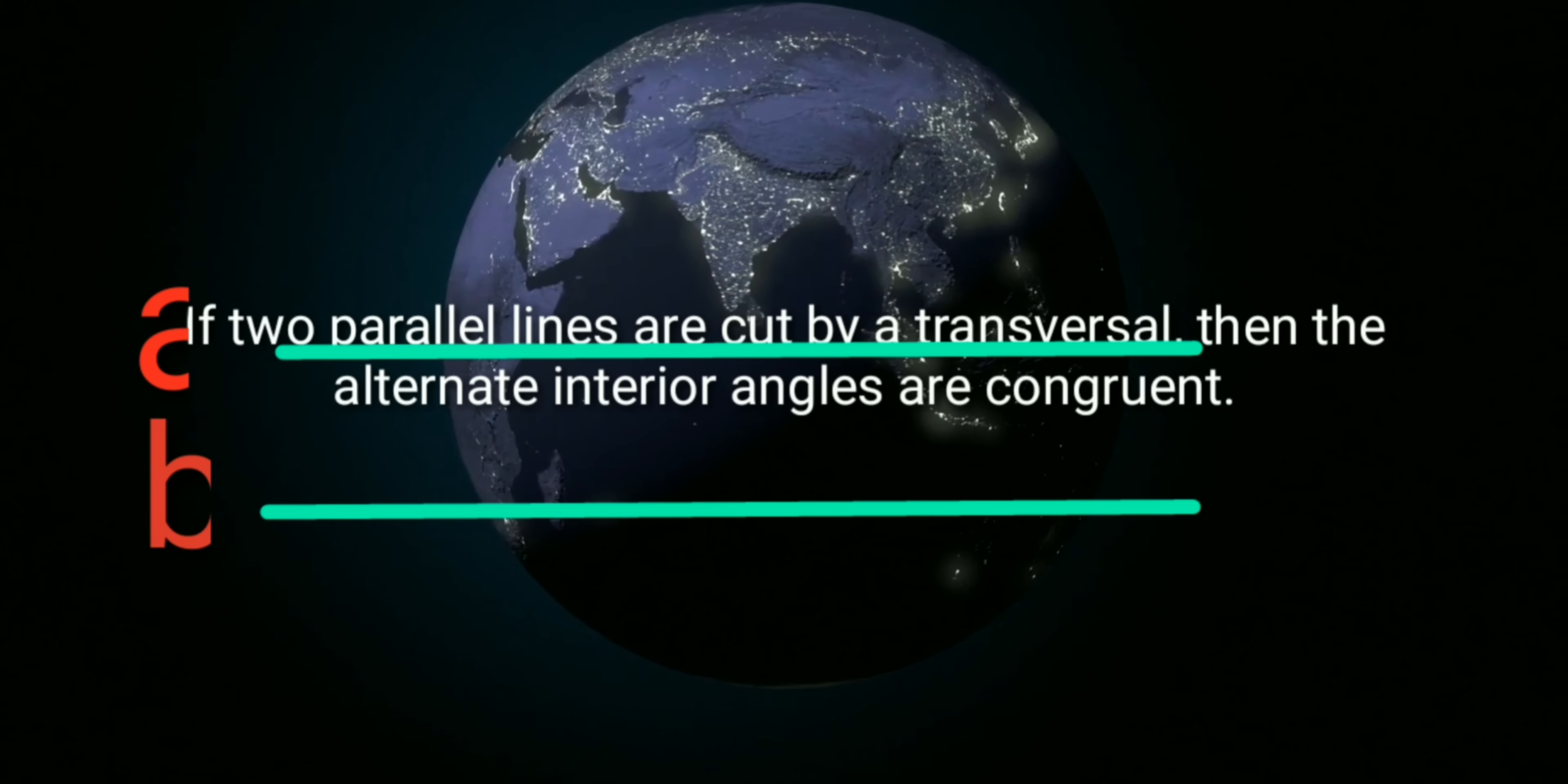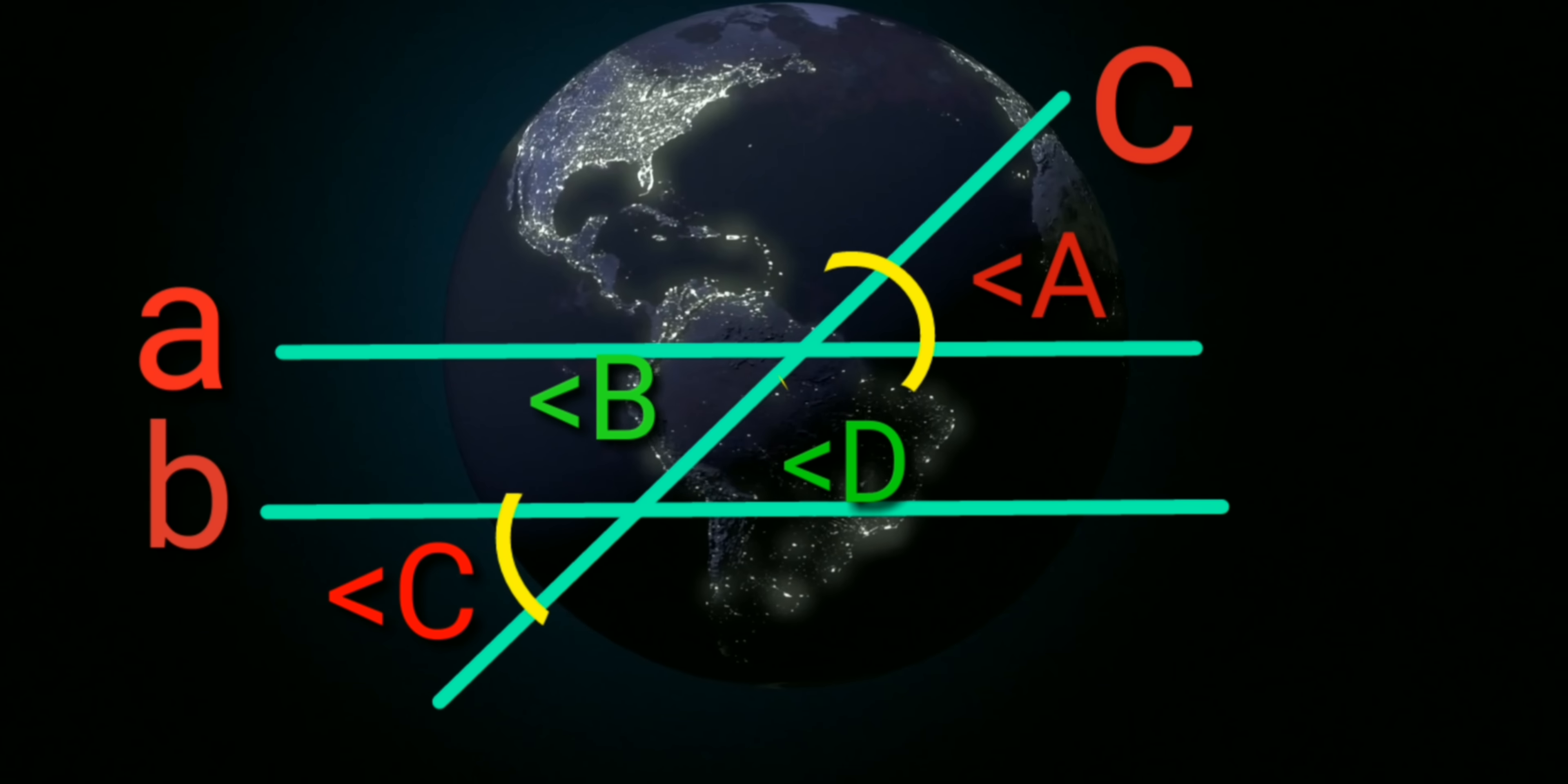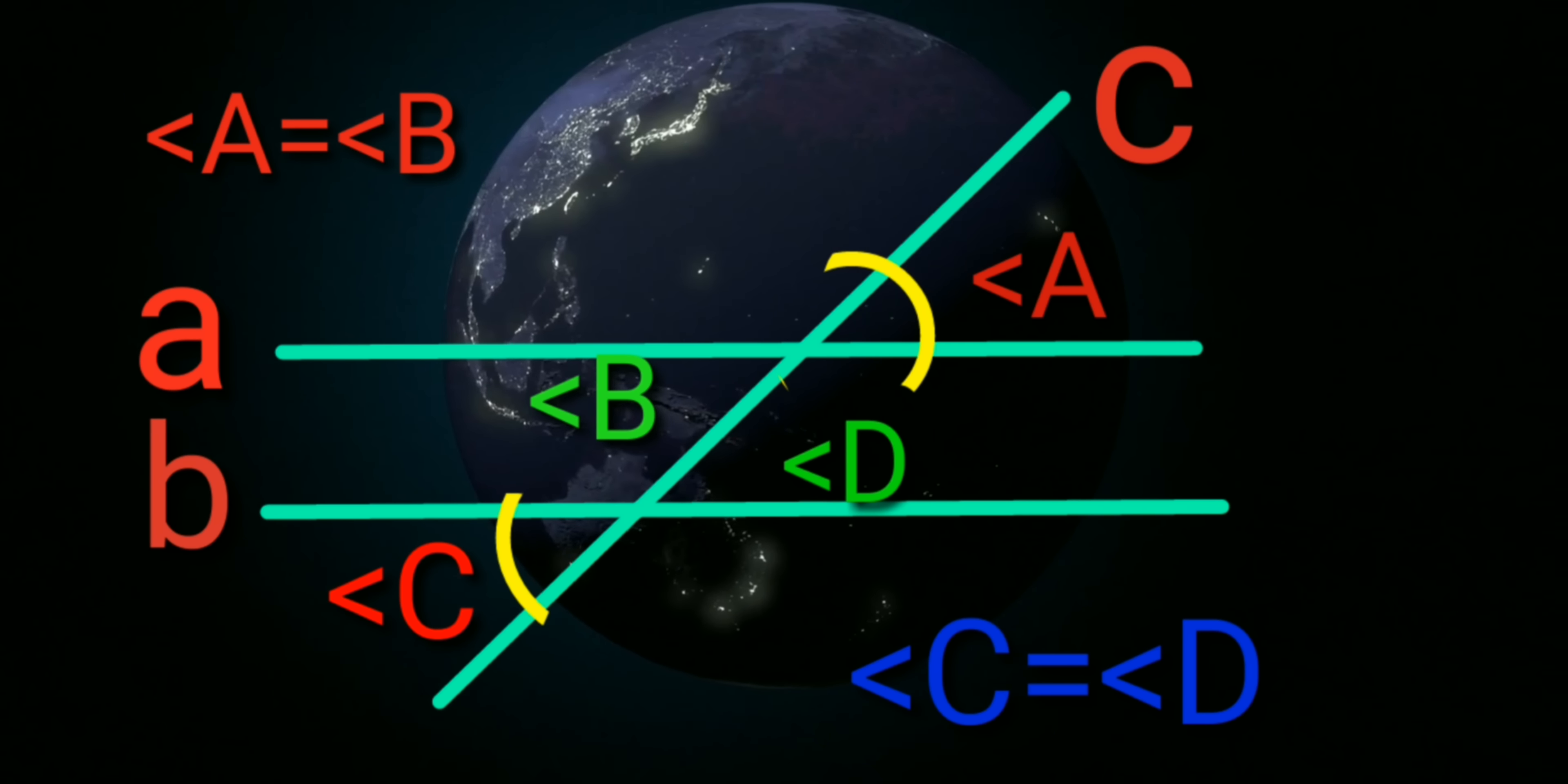The theorem is, if two parallel lines are cut by a transversal, then the alternate interior angles are congruent. Here are two parallel lines a and b. These are cut by a transversal c. Now we have to prove that angle A and angle C are congruent. Let's start.